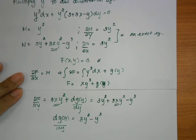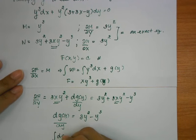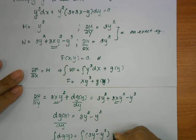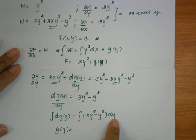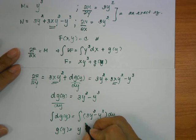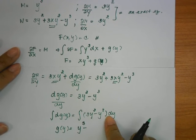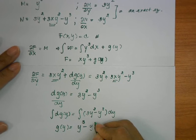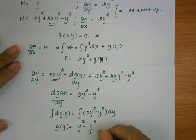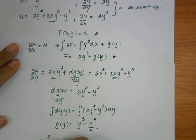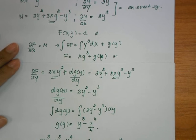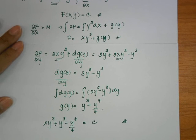From this we can find g(y) by integrating the remaining terms: ∫(3y² − y³) dy. We get g(y) = y³ − y⁴/4. Plugging this into f, we get xy³ + y³ − y⁴/4 equal to c. That is the solution of the differential equation.